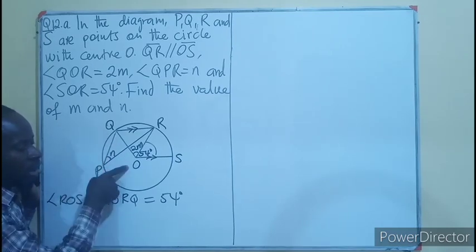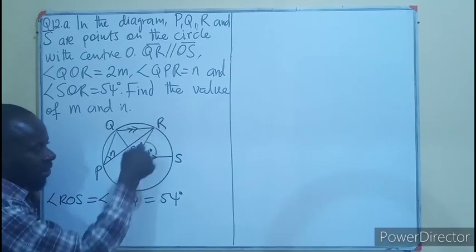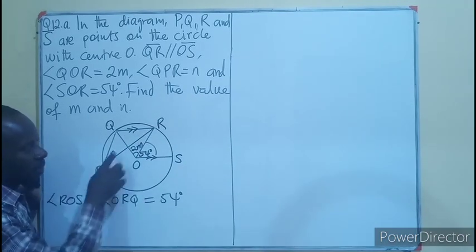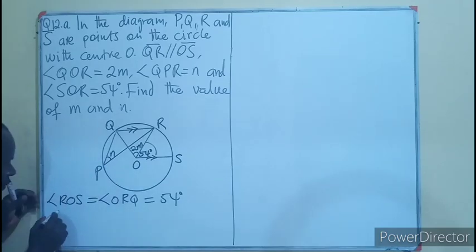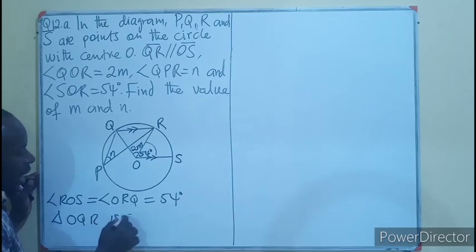If QO is a radius, then RO is also a radius because it's also from the center to the circumference. This makes triangle OQR an isosceles triangle.